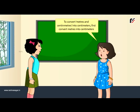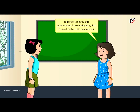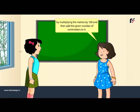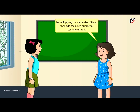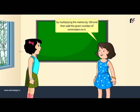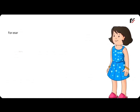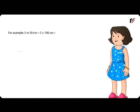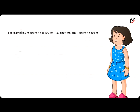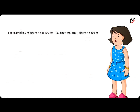To convert meters and centimeters into centimeters, first convert meters into centimeters by multiplying the meters by 100, and then add the given number of centimeters to it. For example, 5 m 30 cm = 5 × 100 cm + 30 cm = 530 cm.